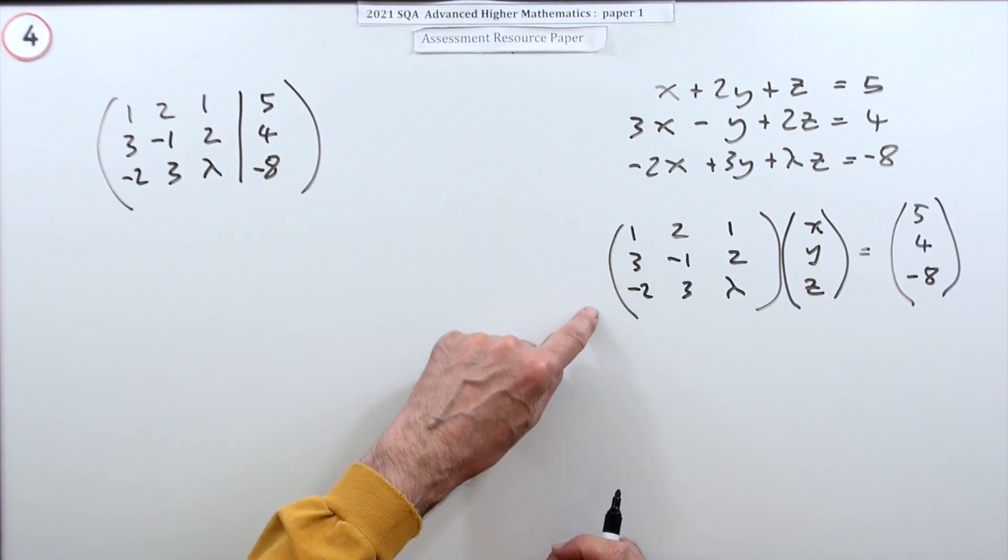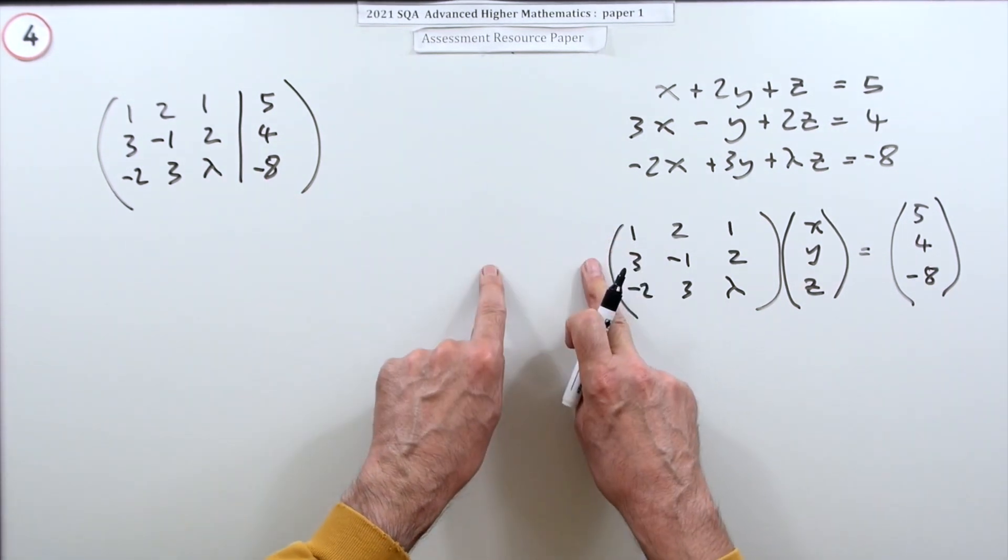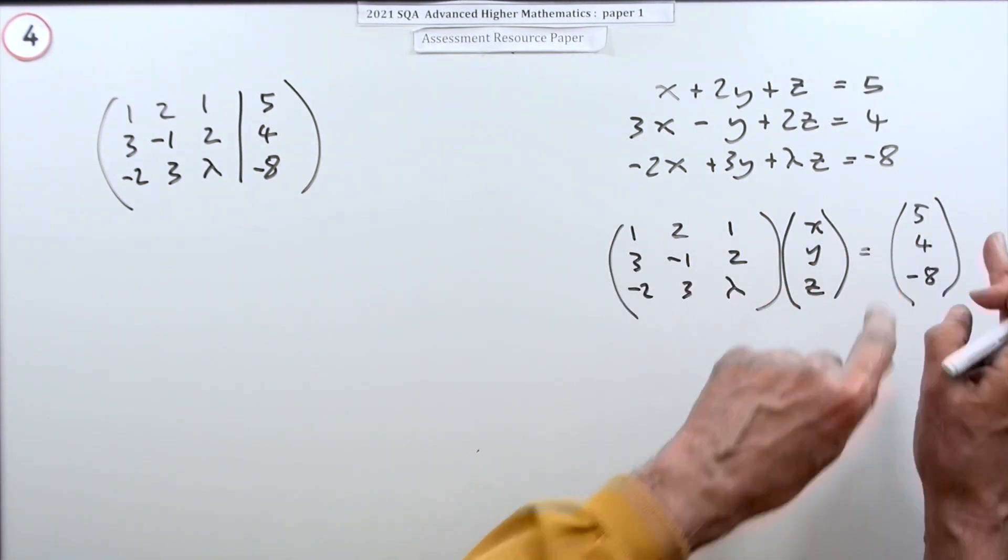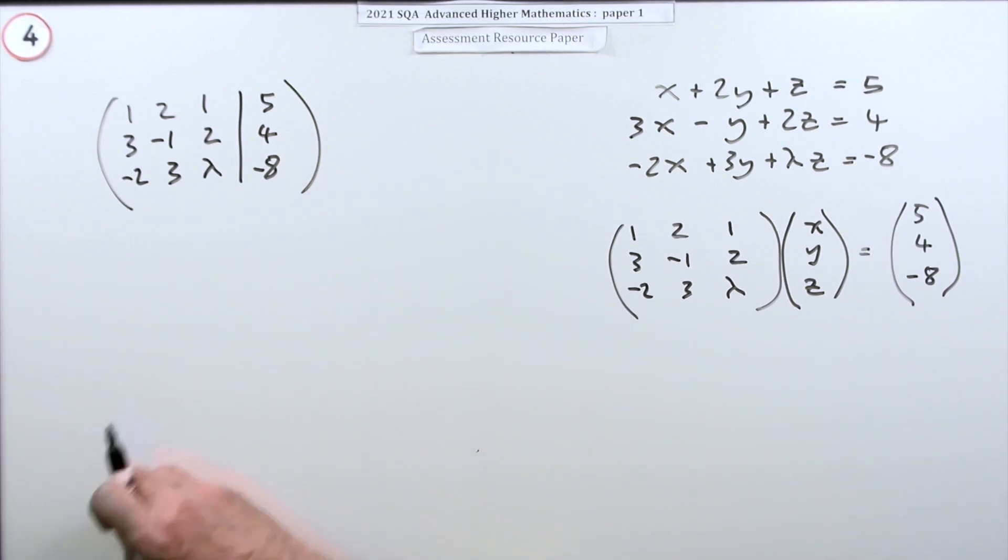Because the operations you carry out in this get replicated in this one. Simply because if you have to multiply this by whatever, you have to multiply that by the same thing. Now doing that, putting down the augmented matrix gets you the first mark.